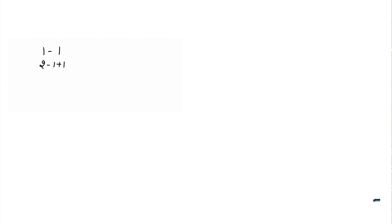1 can be written as I. Then 2 can be written as I plus I, so for each 1 there is one I, giving us II. Then 3 is 2 plus 1, so we write two I's for the 2 and another I, giving us III.